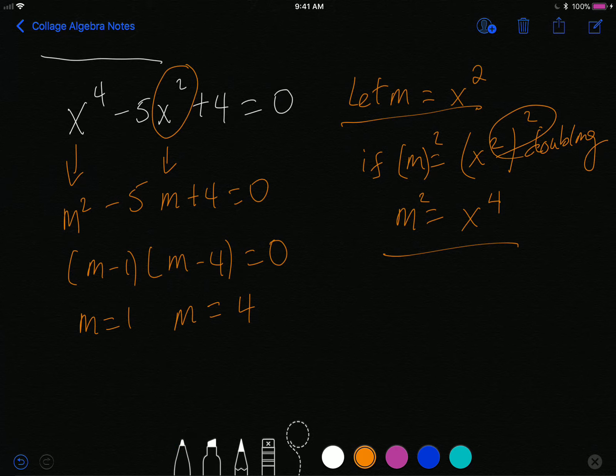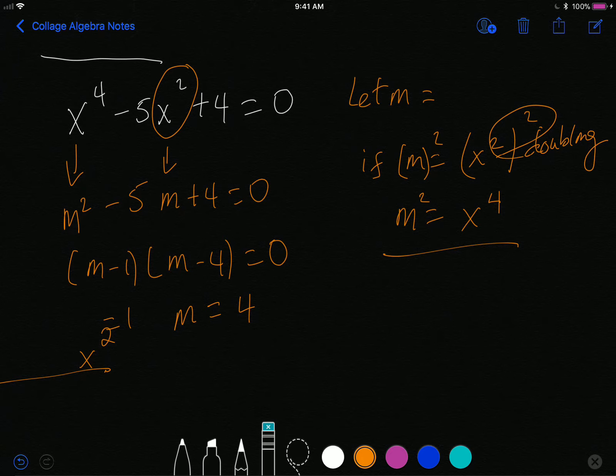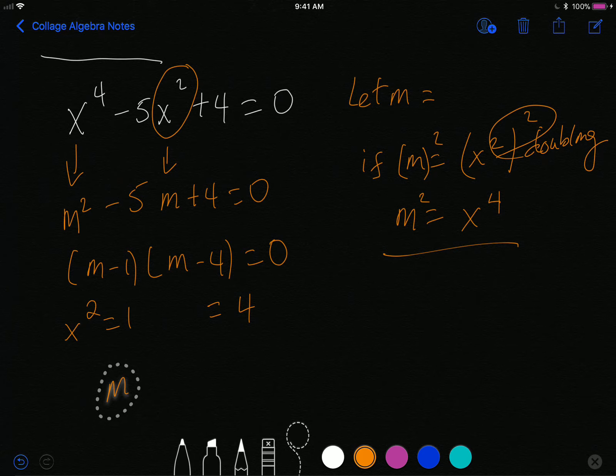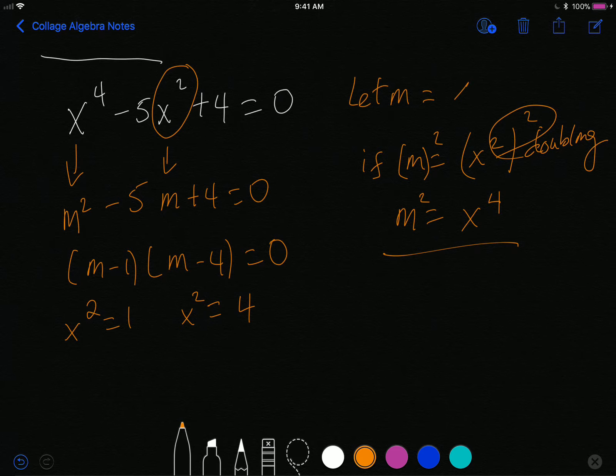But again, just like before, m is actually equal to x squared. And so the x squared is going to take the place of the m right here. Let me make some space for the x squared. And so your x squared right here comes in. And so what I get is x squared equals 1. And similarly, x squared comes in right here. And this right here is one of the most important steps right here. After you solve for m, you're not done. You need to go back and then replace that m with the variable m took hold of.